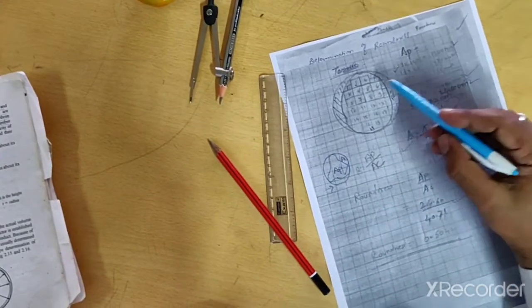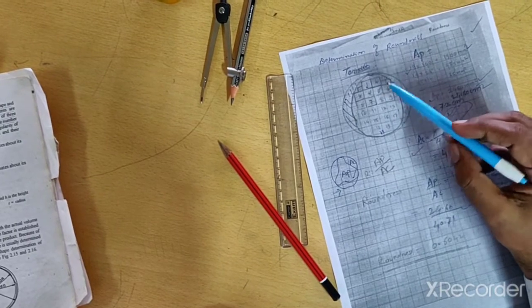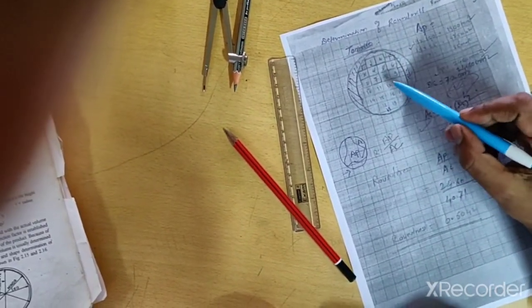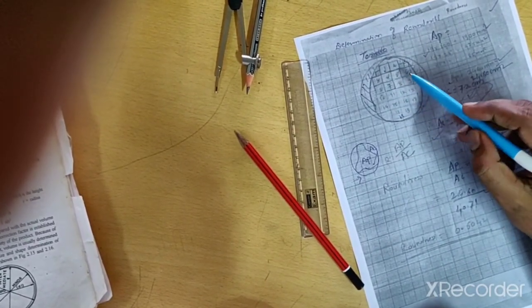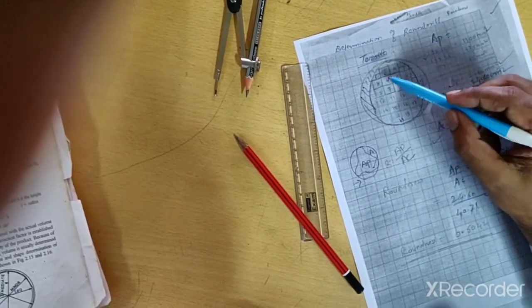So continuing in this video lecture, we will continue by measuring the number of squares enclosed by this periphery, the outline we draw.